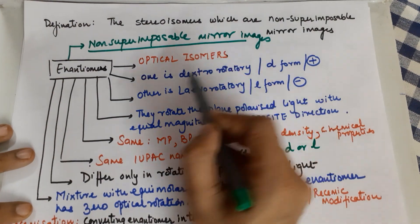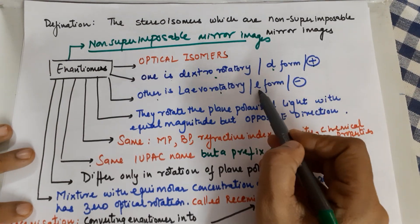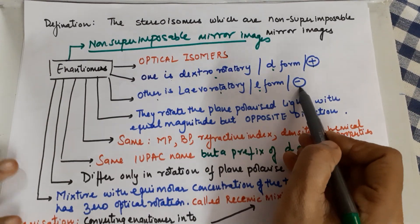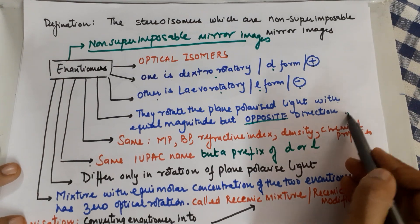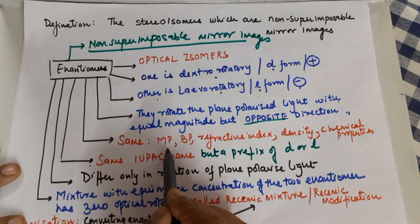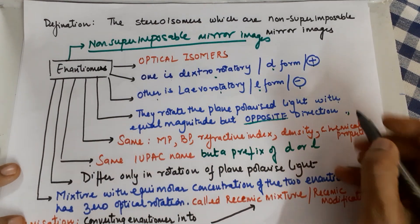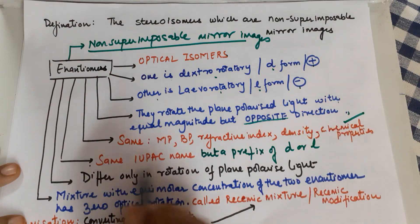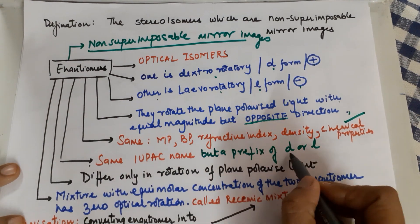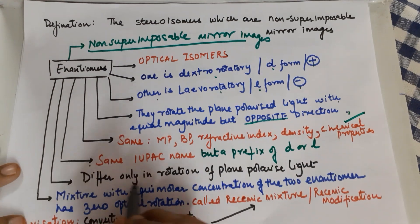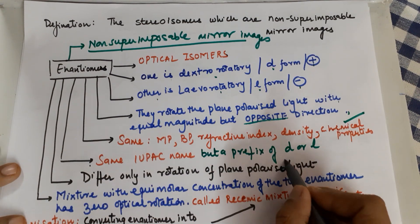Optical isomers — one is dextro, the other is levo, D and L, or plus and minus. They rotate plane polarized light with equal magnitude but opposite in direction. Same melting point, boiling point, refractive index, density, and also chemical properties. Same IUPAC name — only a prefix of D or L is introduced. They differ only in the rotation of plane polarized light, nothing else.